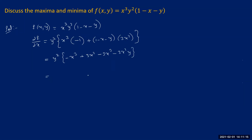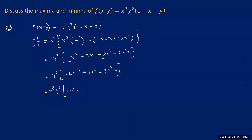Simplifying: y² times [−x³ + 3x² − 3x³ − 3x²y] = y² times [−4x³ + 3x² − 3x²y]. Taking x² common from the bracket, we get ∂f/∂x = x²y²(−4x + 3 − 3y).